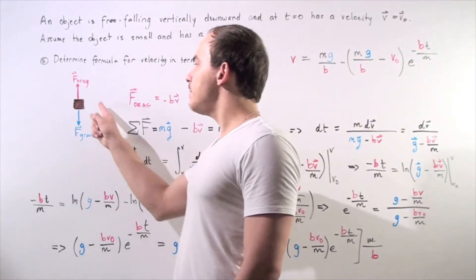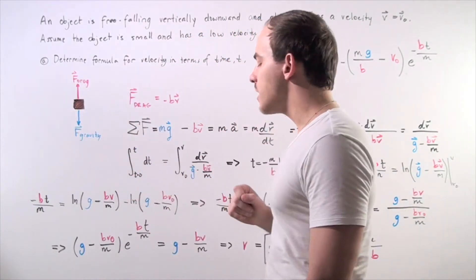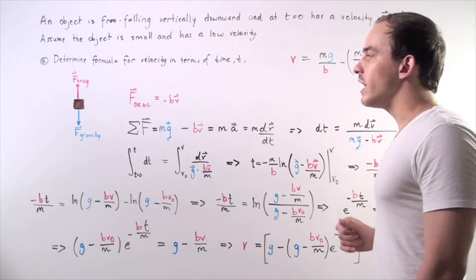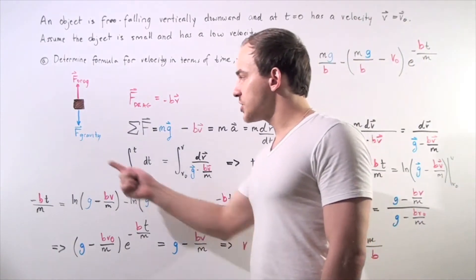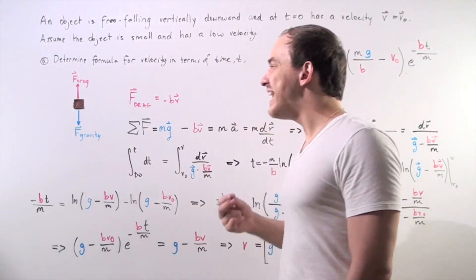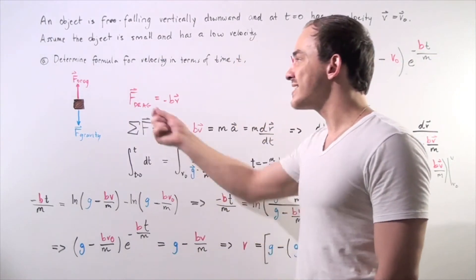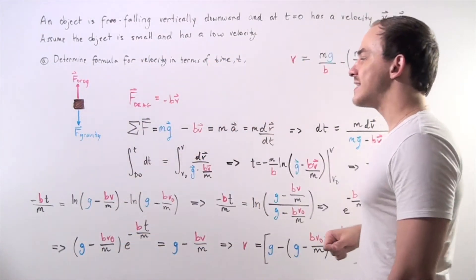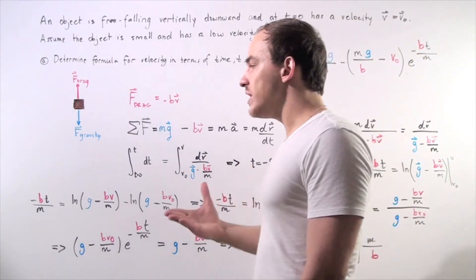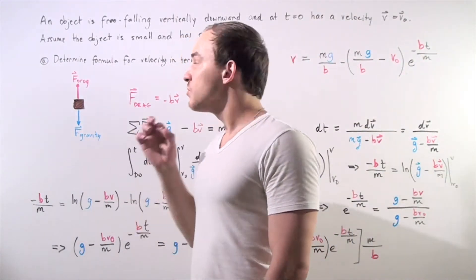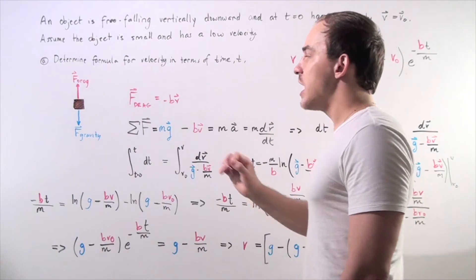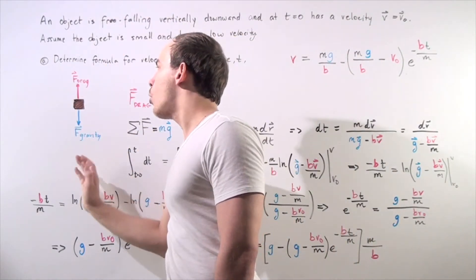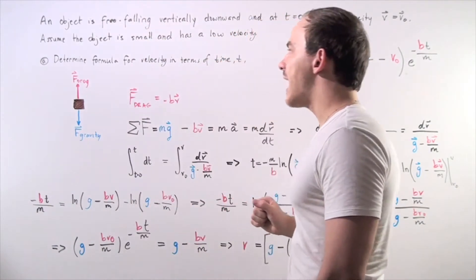Let's begin by labeling all the forces acting on our object as it's free falling downward along the y-axis. One force, the force of gravity, is our net force that creates our acceleration and points downward. And likewise, we have a resistive force known as the drag force that points in the opposite direction, so it points upward along the y-axis.